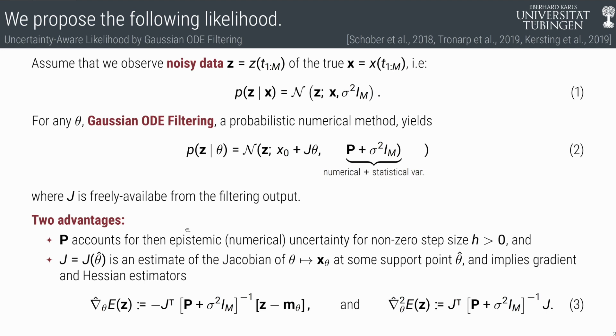There are two advantages of this. You see the equation two is the formula. First one is that we have P from Gaussian ODE filtering, which accounts for the numerical or epistemic uncertainty, which is added to the statistical variance. It's both approximation errors, so no difference.